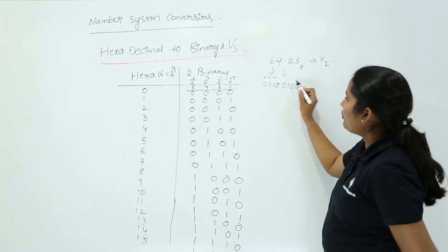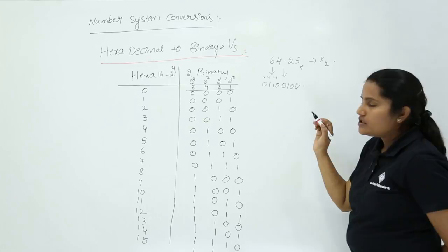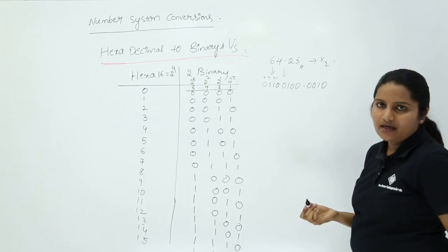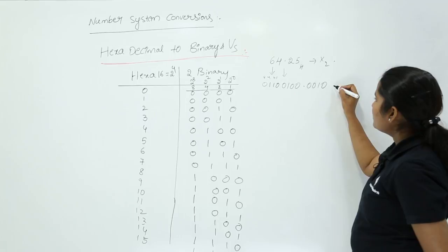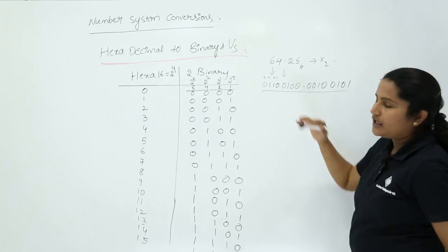After the point, for 2, only the 2's place is enabled, giving 0010. For 5, you need 4 plus 1, so the binary is 0101. In this way you can convert any given hexadecimal number into binary — 64.25 hex becomes 0110 0100 . 0010 0101 in binary.